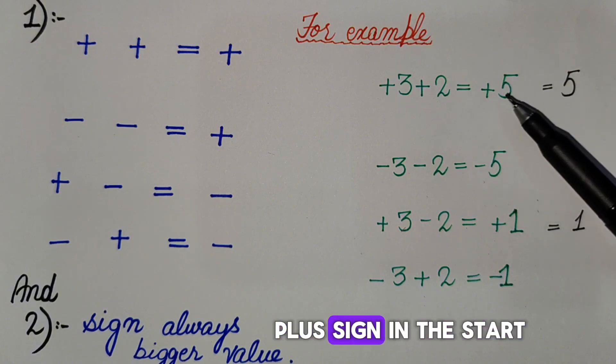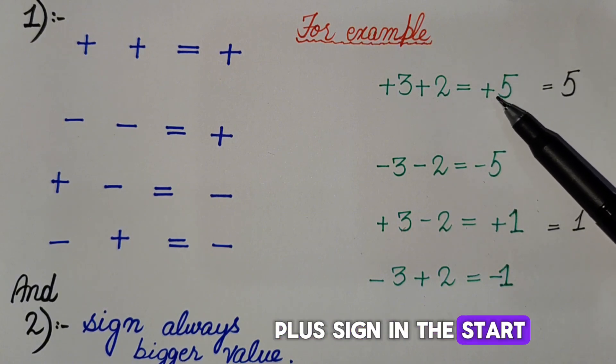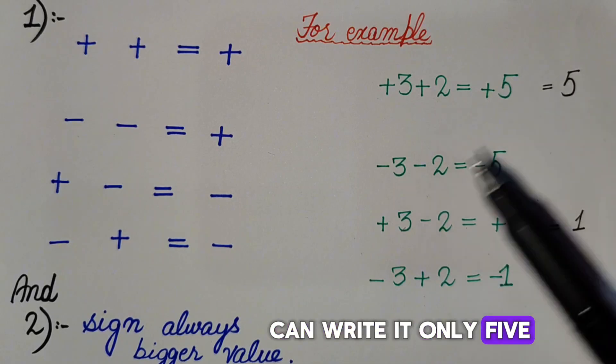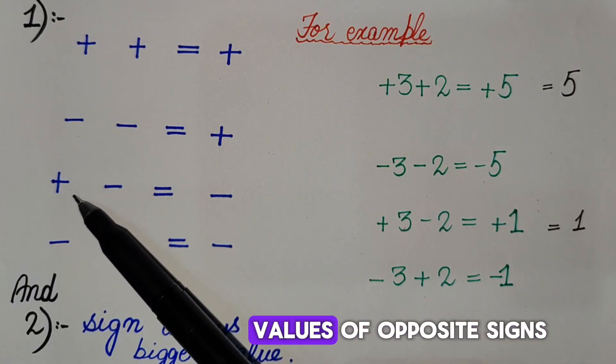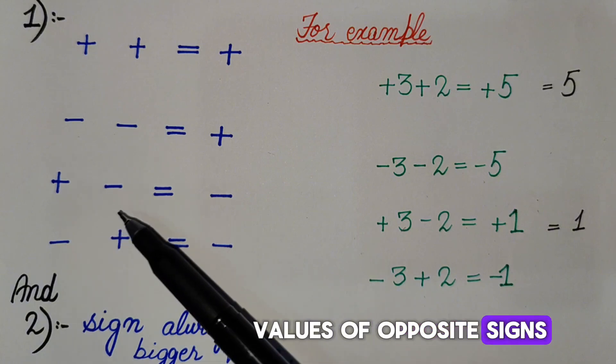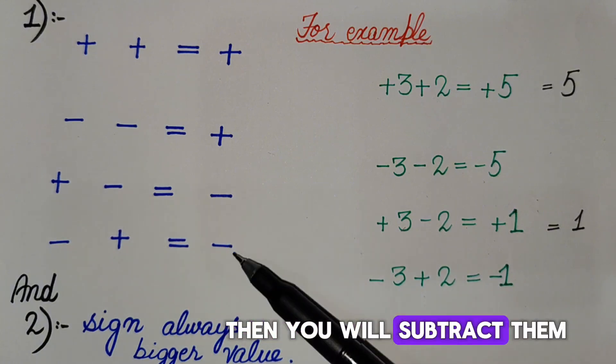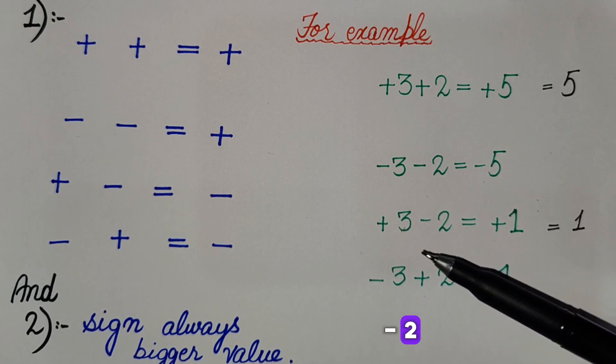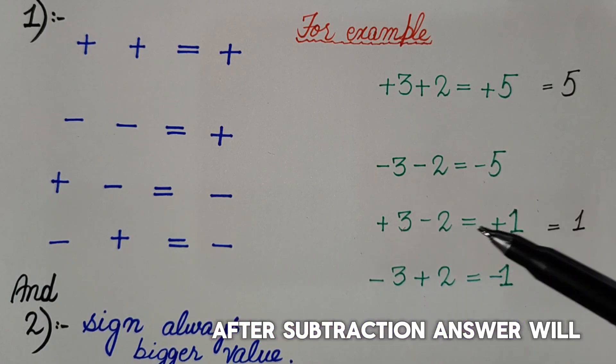So plus five you can write it only five. And you have two values of opposite sign, then you will subtract them. For example, plus three minus two, after subtraction answer will be one.